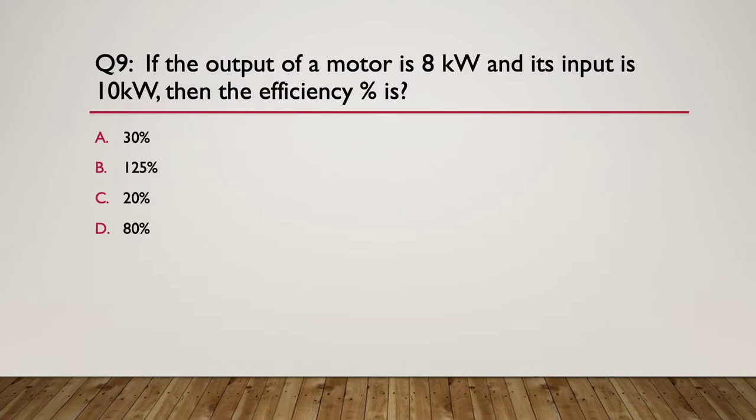9. If the power output of a motor is 8 kilowatts and its input is 10 kilowatts, then the efficiency percent is. Pause here. Why do you think about what formula you need? Here's our hint. Energy efficiency equals, it's in percent. Output divided by input multiplied by 100.